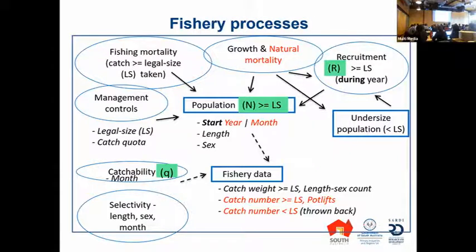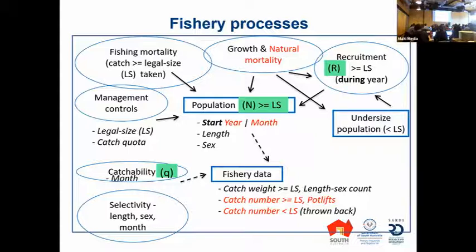This is a quick scheme of what LENMOD does — EDM does a subset of that. This is the typical integrated model scenario: fishing mortality, a legal size LS, growth and natural mortality (natural mortality is fixed), recruitment to legal size, and an undersized component modeled by LENMOD. It's a catch-quota managed fishery with an eight-month season in the southern zone. EDM estimates a single catchability, but LENMOD estimates eight different catchabilities — one for each month, though that can be varied. Selectivity can be length, sex, and month varying.